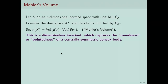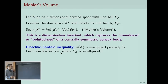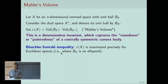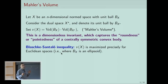This quantity, in some sense, captures the roundness of the convex body, or equivalently, of the normed space. To support this statement, I want to state a famous inequality known as the Blaschke-Santaló inequality. It states that mu of X is maximized precisely for Euclidean structures — if and only if the unit ball is an ellipsoid. This was proved by Blaschke in the 1920s for the two-dimensional case and the general proof was given by Santaló in the 1950s. So mu of X captures some roundness of the convex body; the extremizer is the ball or an ellipsoid.